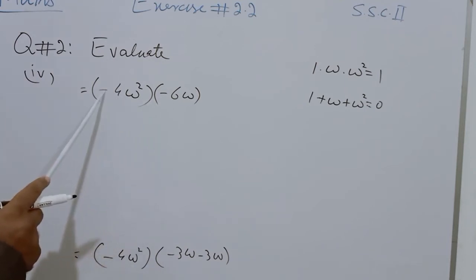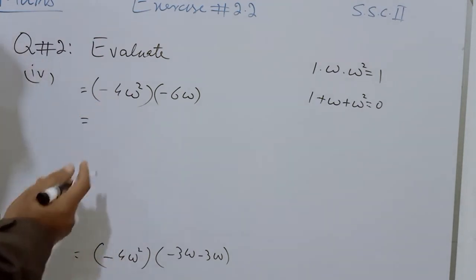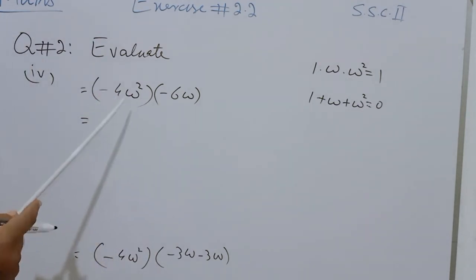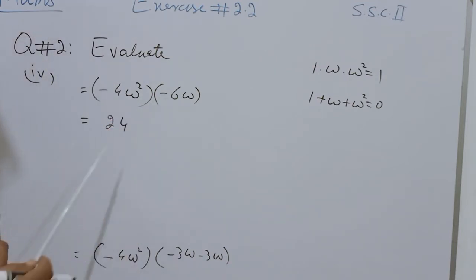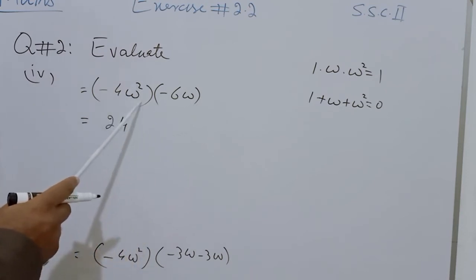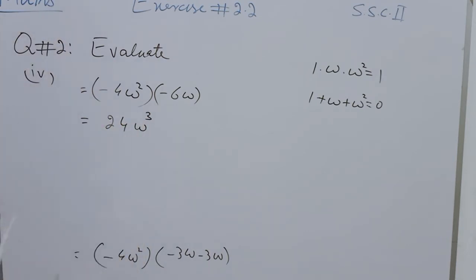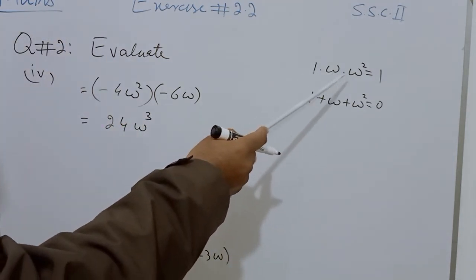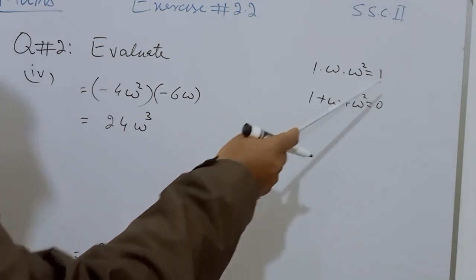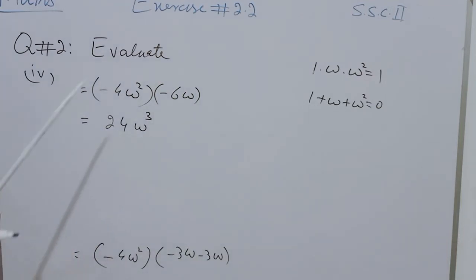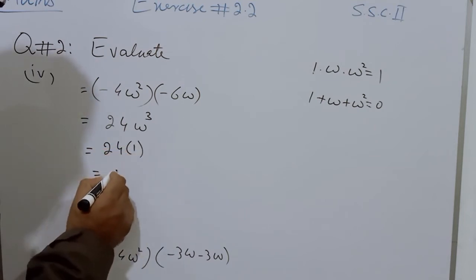These two numbers are multiplying: minus 4omega squared times minus 6omega. When minus is multiplied by minus, we get plus. Plus is not written because it is understood. Four multiplied by 6 means 24. Omega squared times omega — their bases are the same, so their exponents are summed, giving omega cubed. Since 1 times omega times omega squared equals omega cubed, and the value of omega cubed is 1, we put 1 in place of omega cubed. So 24 times 1, and the answer is 24.